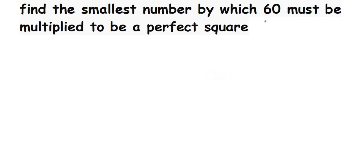This type of question is really important. When they ask for the smallest number to be multiplied or divided, you have to use the prime factorization method. When they ask for the smallest number to be added or subtracted, you have to use the division method. Since we're asked for the smallest number to be multiplied, we're going to use prime factorization on 60.